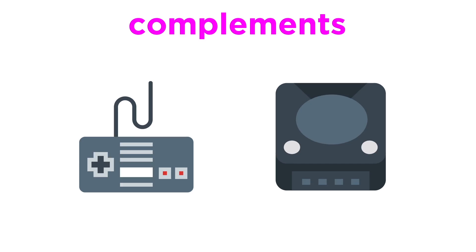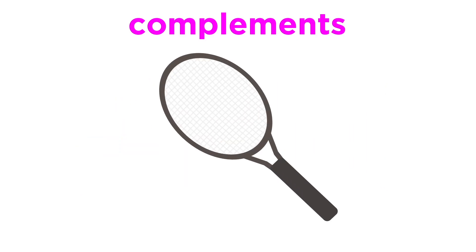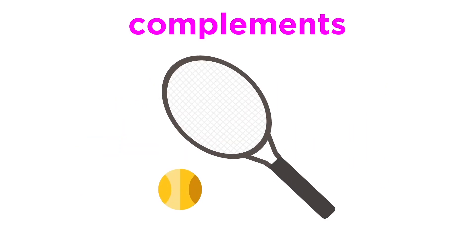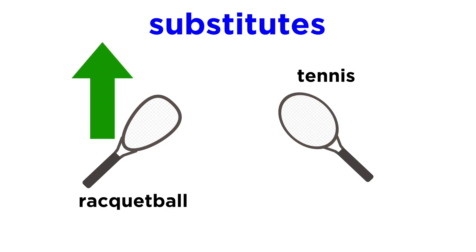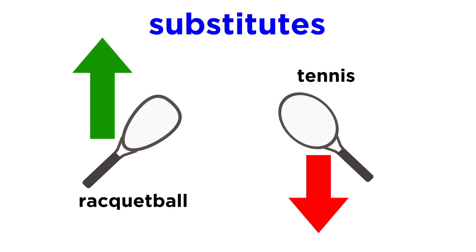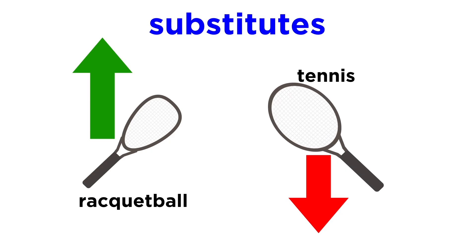Complements are two goods that are bought and used together — they complement each other, hence the name. When we consider the demand for tennis rackets, tennis balls are considered a complement since playing tennis requires both items. Substitutes are goods that are used in place of one another. If demand for racquetball rackets went up, that could lower demand for tennis rackets, as racquetball rackets would act as a substitute for tennis rackets.